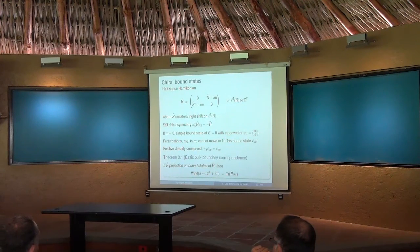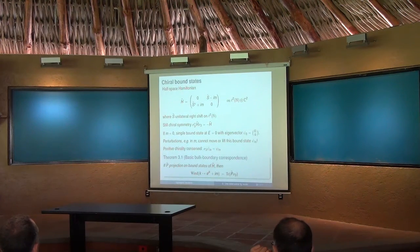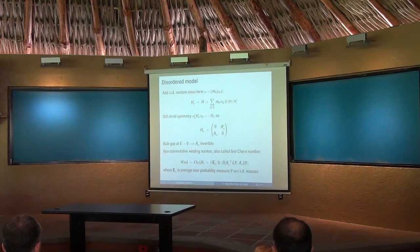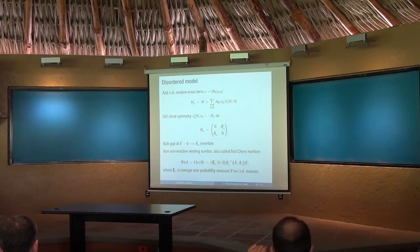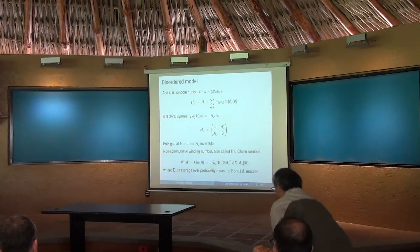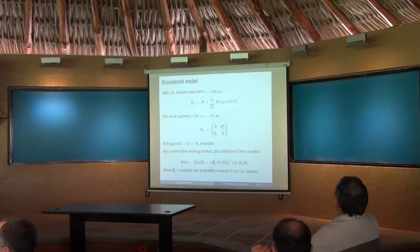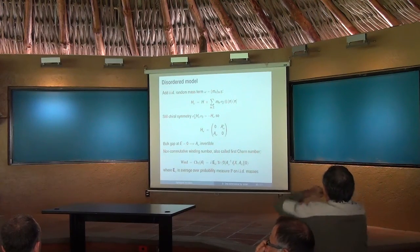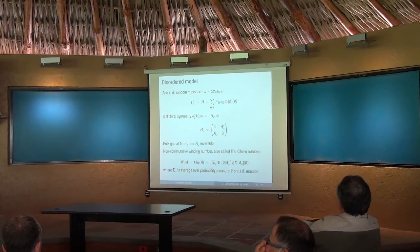That zero mode is in the positive chiral sector, and there's no other zero mode. The existence of the zero mode is linked to the winding number in this simple model — they're just equal. Whenever the winding is zero, which happens when the mass is between minus one and one, a non-zero winding leads to a boundary state. That was true also in the disordered model.